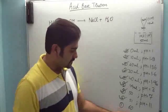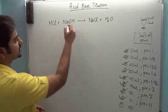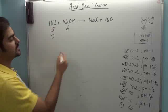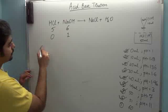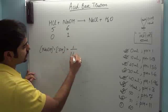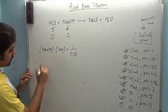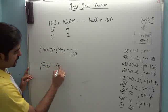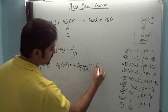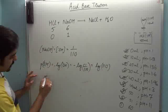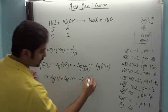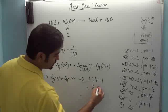Then final: 60 ml pe nikalna hai. 60 ml NaOH ka matlab six millimoles. 50 ml HCl ka matlab five millimoles. Toh five ka toh zero ho ga — HCl is limiting reagent. Toh NaOH ka concentration, that is equal to OH⁻ ka concentration, is 1 upon 110. Toh agar mein iska minus log doon toh mujhe POH milega. Minus log of OH⁻ = minus log of 1/110 = log of 110. And that approximately gives me log of eleven plus log of ten. Log of eleven is approximately 1.04 plus 1. That is 2.04.